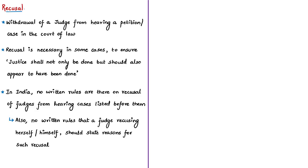Recusal refers to the withdrawal of a judge from taking part as a judge in a case in the court of law. For example, if a person accused in a criminal case is the son-in-law of a Supreme Court judge, and the case comes to appeal before the Supreme Court, then the father-in-law sitting as judge hearing this case is not appropriate. This is because principles of justice and equity demand that justice shall not only be done but should also appear to have been done.